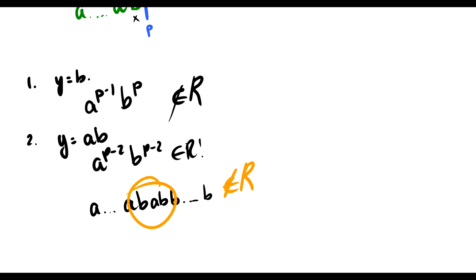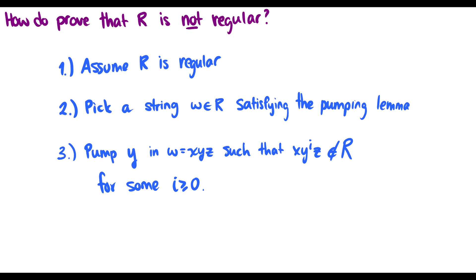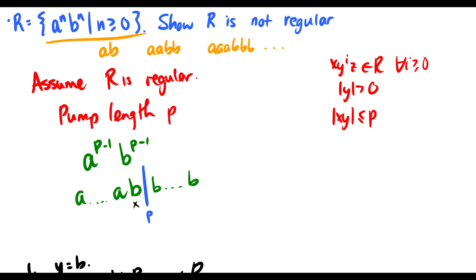We can conclude that the language a^n b^n is not regular, because we assumed it was, picked our string to pump, and it doesn't work. So a^n b^n is not possible to do with finite state machines — it is not a regular language.